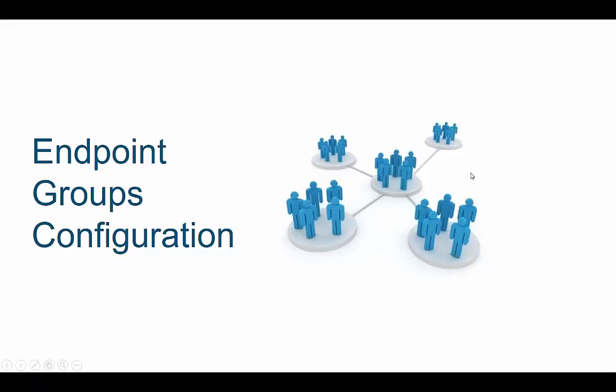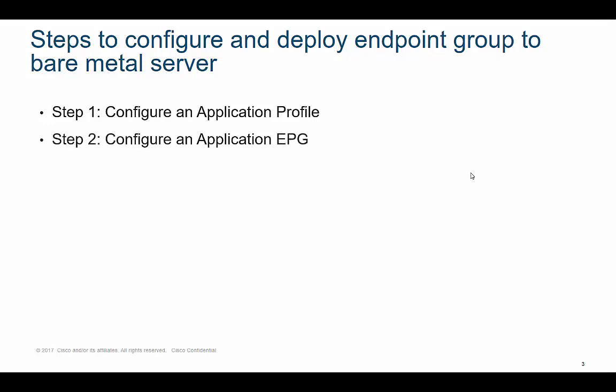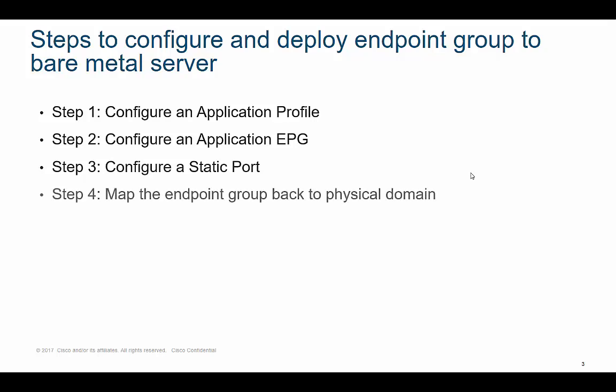We are going to talk about how to configure endpoint groups, going over some specific steps. It's a four-step procedure. Step one, you configure an application profile. Step two, you configure an application EPG. Step three, you configure a static port. And then step four, you map your endpoint group back to what's called a physical domain.